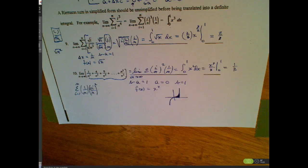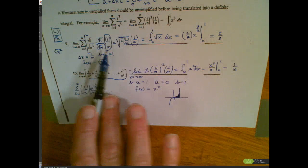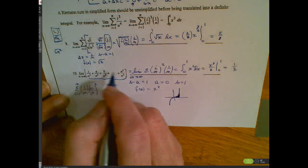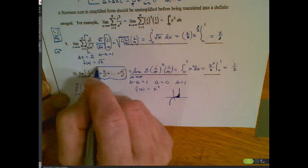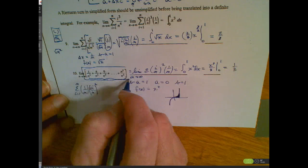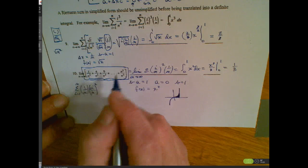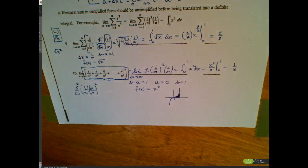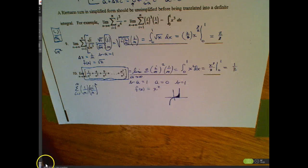So we have a Riemann sum from which we've built the definite integral. For the last two examples, we had to un-simplify our Riemann sums. Try to understand how an expanded Riemann sum can be written and you'll have a clue on how to solve these problems. I hope this helped — good luck!